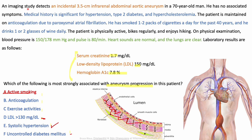Reading the question for completeness: the aneurysm is 3.5 cm — not yet at the threshold for repair, which is 5.5 cm or above in males and 5 cm in females. The patient has metabolic syndrome, smoking, atrial fibrillation, alcohol use, and hypertension — many risk factors — but the question asks which is most strongly associated with aneurysm progression. The answer is active smoking.